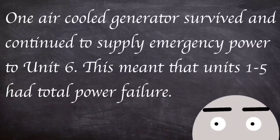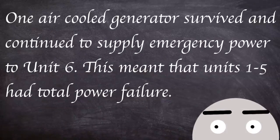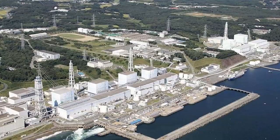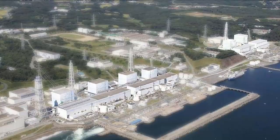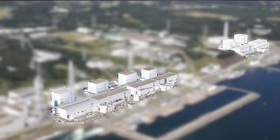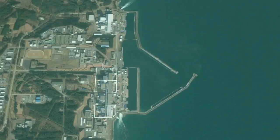One air cooled generator survived and continued to supply emergency power to unit six. This meant however that units one to five had total power failure. The power station was designed to be able to work off DC batteries for up to eight hours in the event of a loss of AC power generation. However, some of these systems were also affected by the flooding inundating the functional DC systems. Power started to dwindle in units one two and four 15 minutes post-flood due to loss of all AC and DC power.